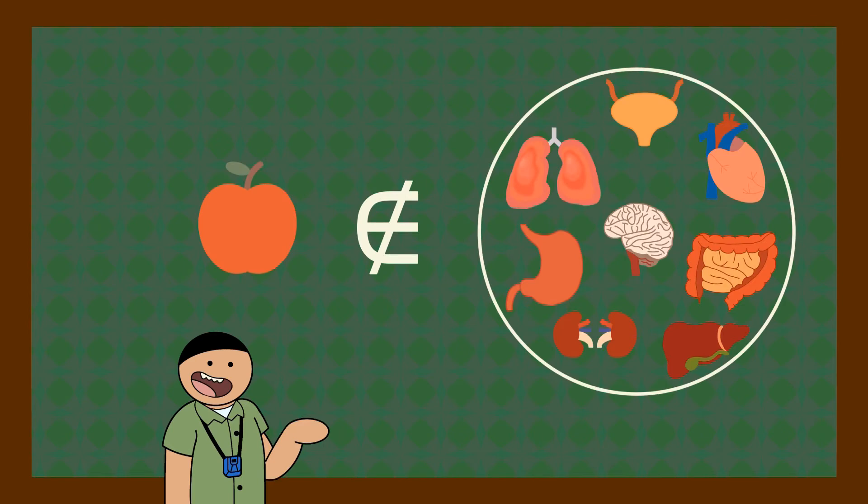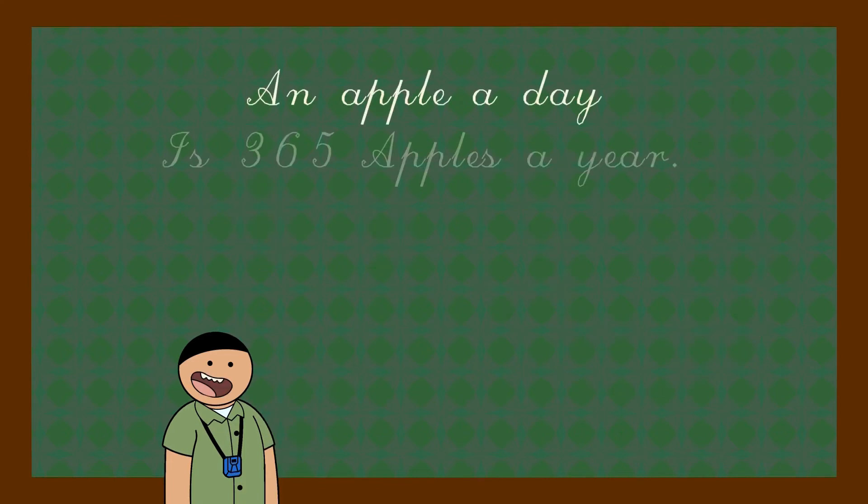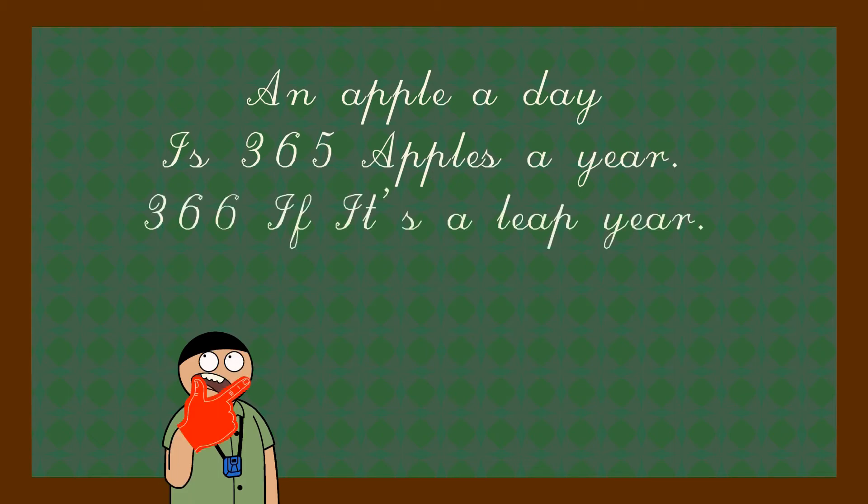An apple is not an object of the set of internal organs because an apple is a fruit. And you know what they say about apples: an apple a day is 365 apples a year, 366 if it's a leap year.